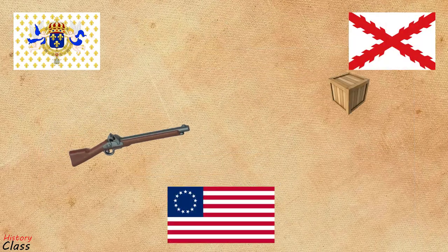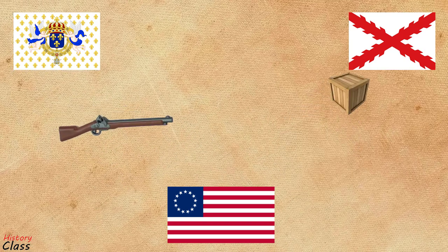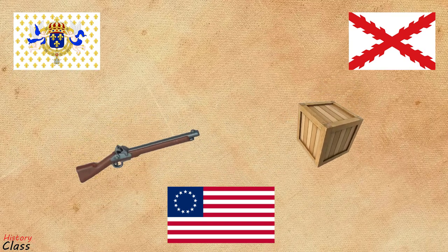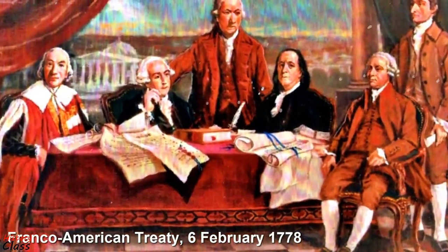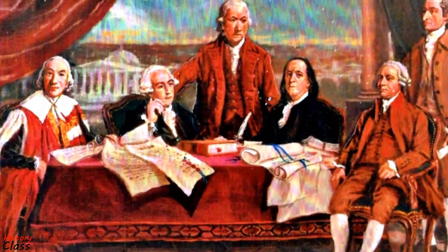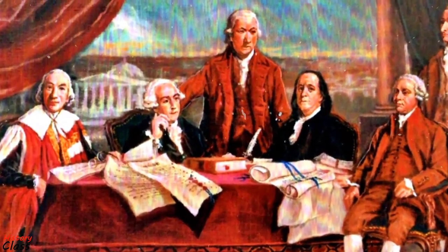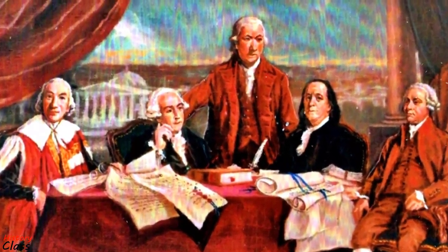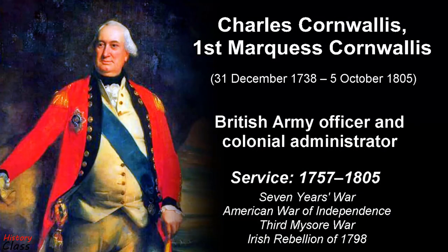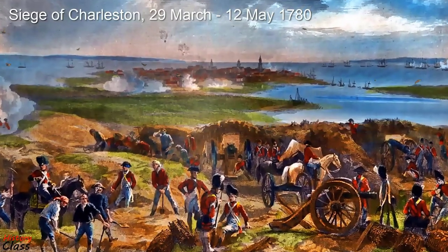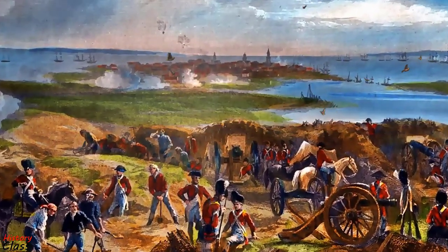The British defeat in the Saratoga campaign had drastic consequences. France and Spain had secretly provided the colonists with weapons, ammunition, and other supplies since April 1776. In 1778, France formally entered the war, signing a military alliance that recognized the independence of the United States. Giving up on the north, the British decided to salvage their former colonies in the south. British forces under Lieutenant General Charles Cornwallis seized Georgia and South Carolina, capturing an American army at Charleston, South Carolina, in May 1780.